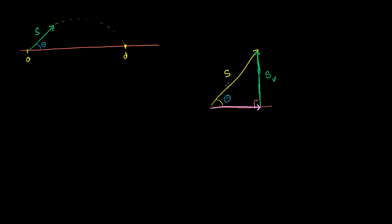I use the word velocity when I specify a speed and a direction — speed is just the magnitude of the velocity. The magnitude of the horizontal side is going to be speed-horizontal. We have a right triangle where the hypotenuse is s. We can write down SOHCAHTOA: sine is opposite over hypotenuse, cosine is adjacent over hypotenuse, and tangent is opposite over adjacent. We're assuming we know theta and s, and we want to figure out what the vertical and horizontal components are.